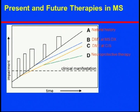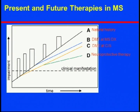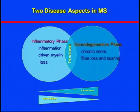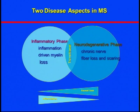However, nothing will stop the progression unless we have a truly neuroprotective therapy. We're hoping to have a therapy that not only delays progression but reduces accumulation of disability and hopefully reverses the course of disease. To have a therapy that works for progression, we need to understand the two disease aspects in MS: one is the inflammatory phase and the other is the neurodegenerative phase.